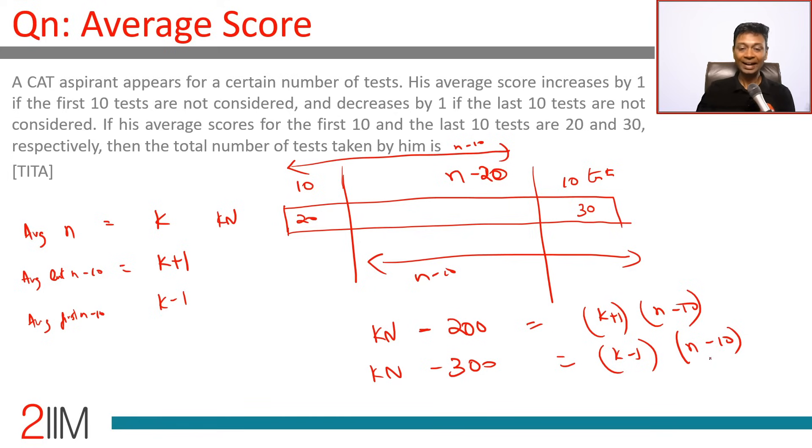Wonderful, kn minus 200, if I subtract 200, then my average increases by 1. If I subtract 300, average decreases by 1. So you can see where this is headed.